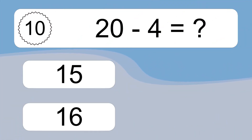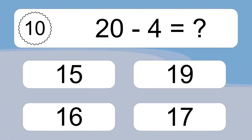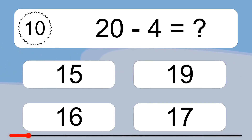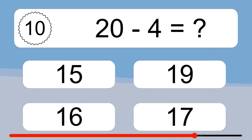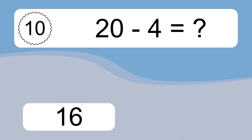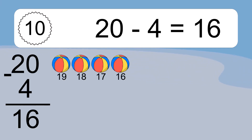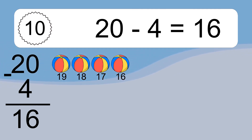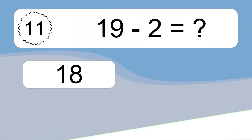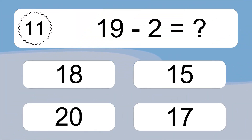20 minus 4 equals what? 20 minus 4 equals 16. Let's count it: 19, 18, 17, 16.